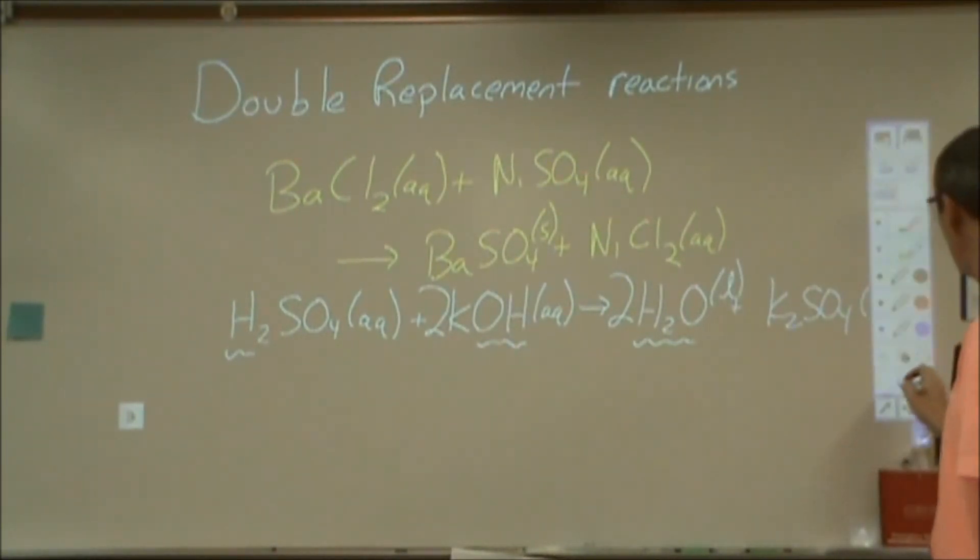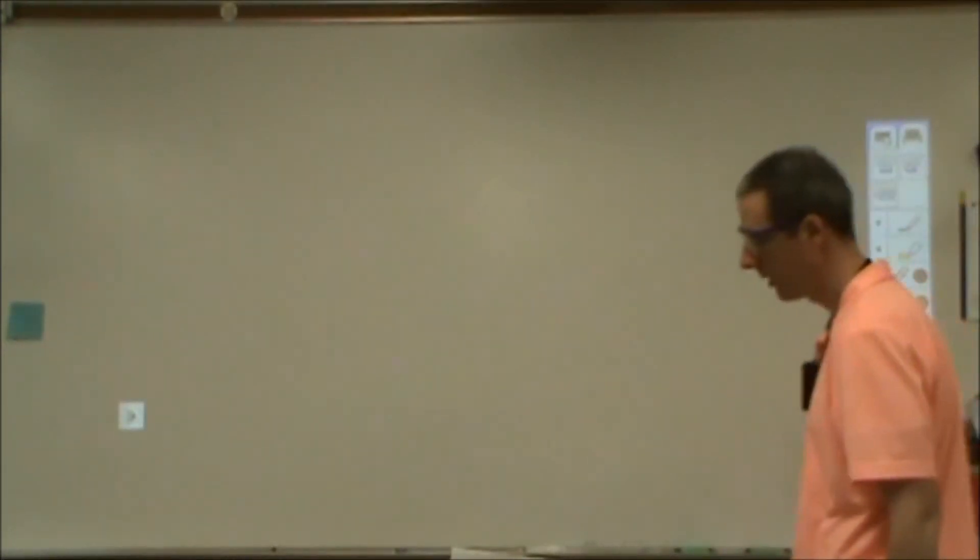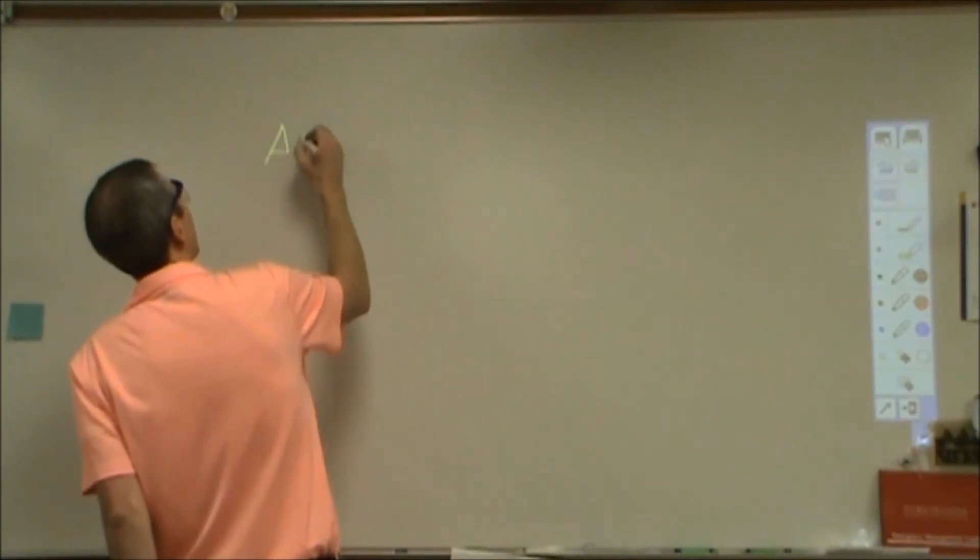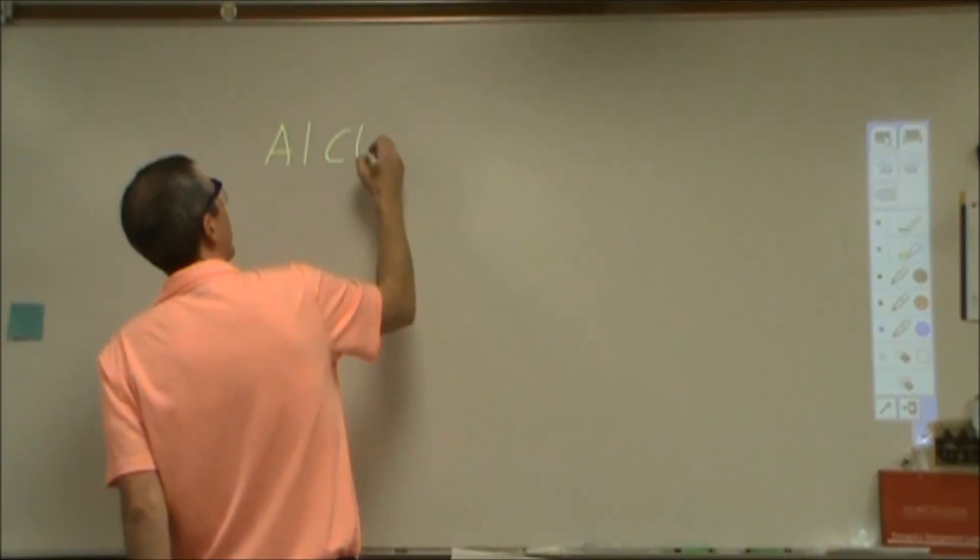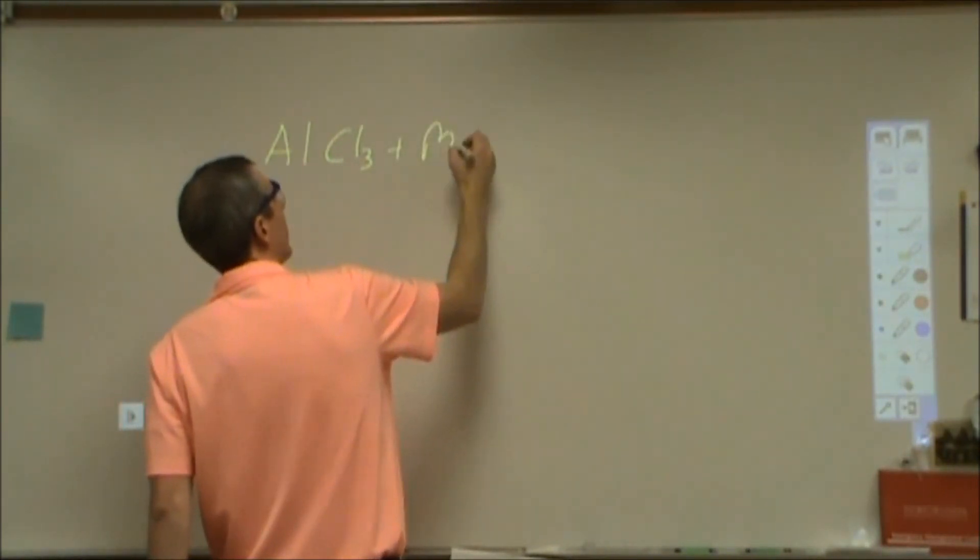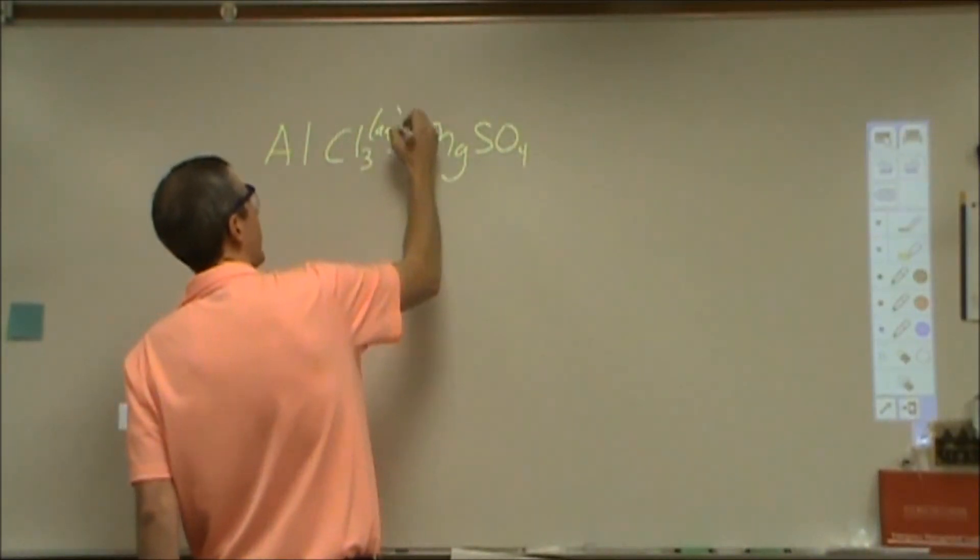So, let's go ahead and do another example here, just to kind of give you a glimpse of how to do the charge balancing for these. So, let's go ahead and take aluminum chloride and magnesium sulfate. Let's assume these are aqueous to start.